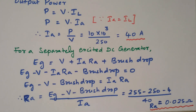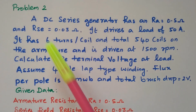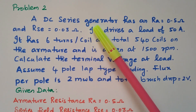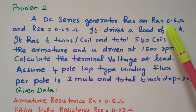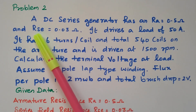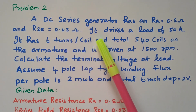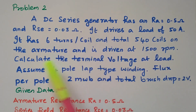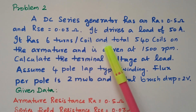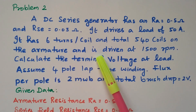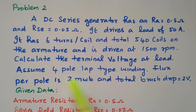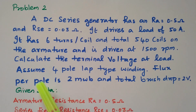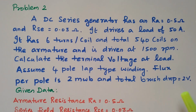Now the second problem: a DC series generator has an armature resistance of 0.5 ohm and series field resistance RS = 0.03 ohm. It drives a load of 50 amperes. It has 6 turns per coil, a total of 540 coils on the armature, and is driven at 1500 rpm. Calculate the terminal voltage at the load. Assume 4-pole lap-type winding. The flux per pole is 2 milliwebers and total brush drop is 2 volts.